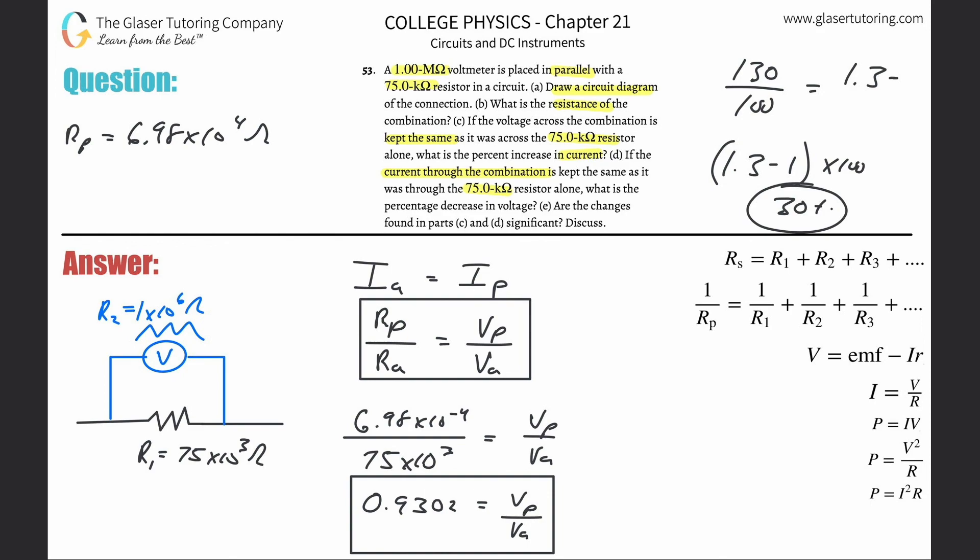But how do you now find the percentage change? Well, whenever your fraction is larger than one, like we had over here, you subtract one from it. You subtract one from the larger ratio. But now if this is less than one, what you're going to do is you're going to take one and subtract now this ratio from it, 0.9302, and then just multiply that by 100 to get it into the percent. So one minus that value, bada bing, bada boom, times 100. And it works out to be about 6.98%.